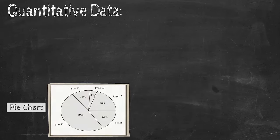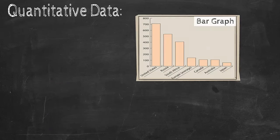A pie chart is a graph that looks round like a whole pie, with slices indicating different categories. The thickness of the slice is relative to the quantity measured in that category. The whole pie adds up to 100%. A bar graph uses parallel bars to indicate a comparable measurement of varying lengths and quantities.